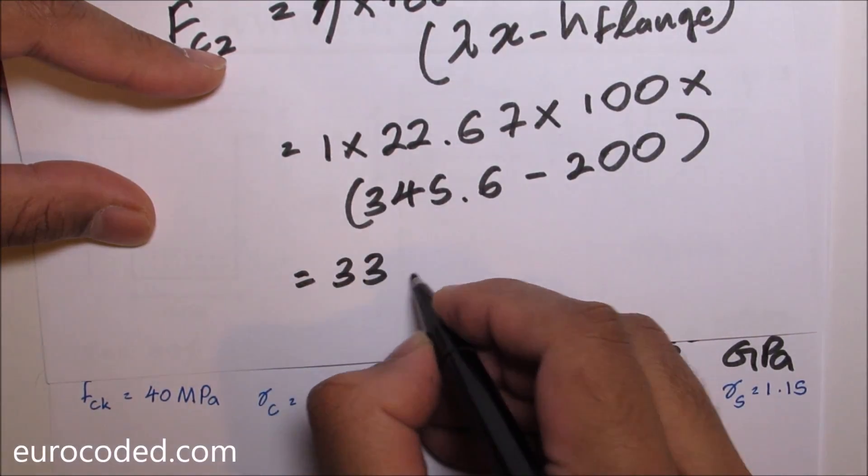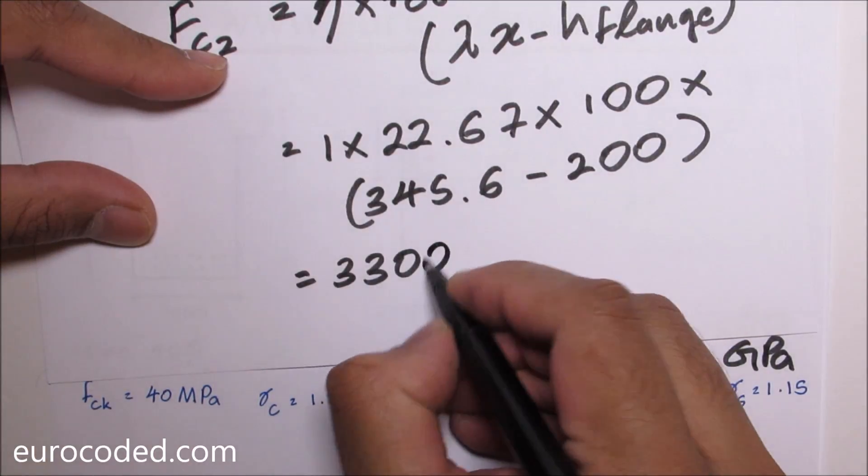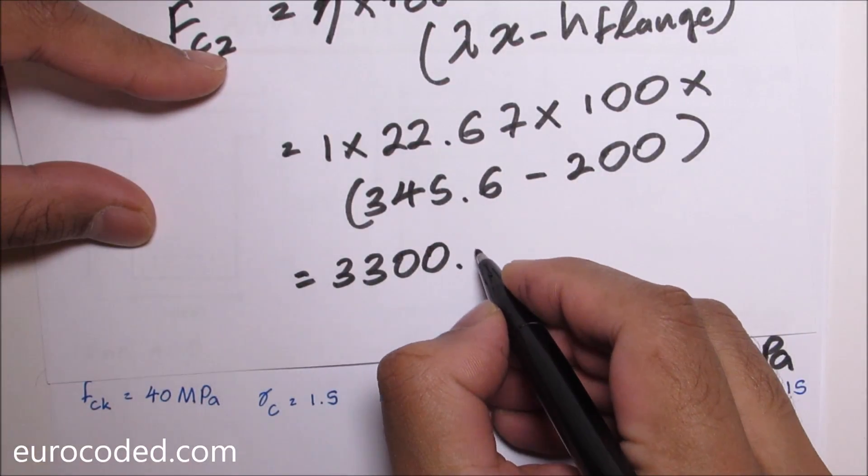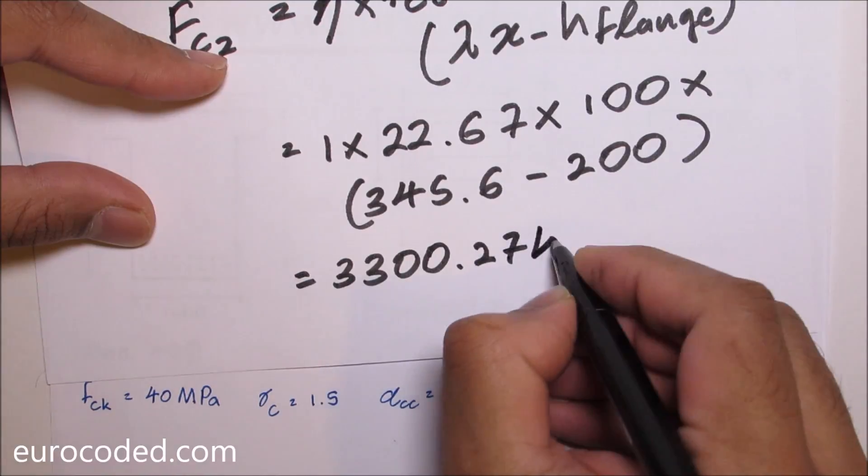FC2 which we can write as lambda X minus height of the flange. This is equal to 3302.7 kN.